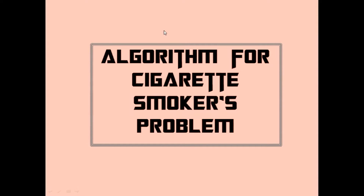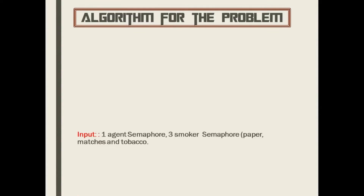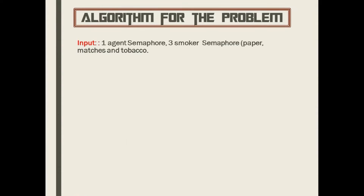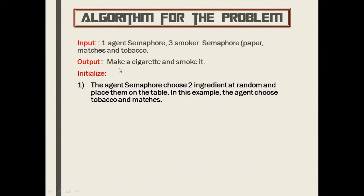In the algorithm for the cigarette smokers problem, the input is one agent semaphore and three smoker semaphores: paper, matches, and tobacco. The output would be to make a cigarette and smoke it. All smoker semaphores start sleeping, and the agent semaphore chooses two ingredients at random and places them on the table.